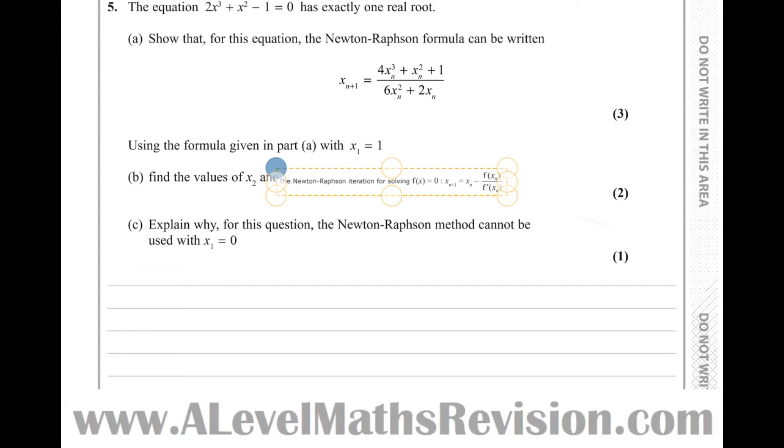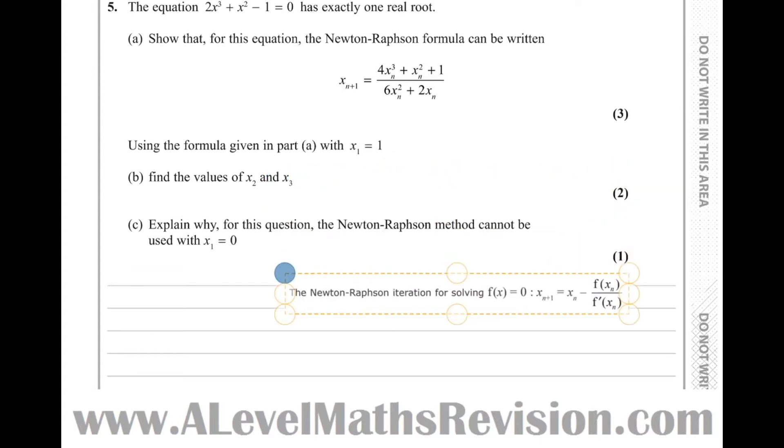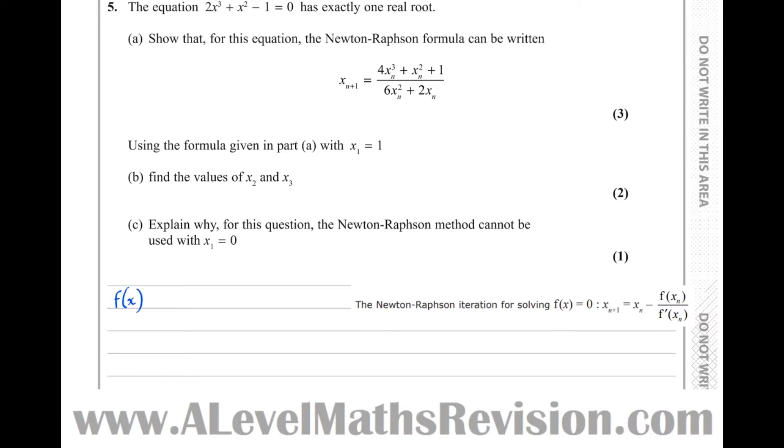So the formula that we're going to use is this one here, the Newton-Raphson one from the formula booklet. The formula is xn+1 equals xn take f(xn) over f dash of xn.